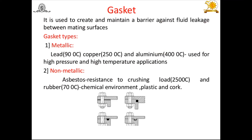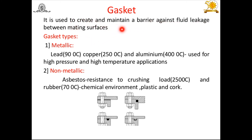The next topic is gaskets. In pressure vessels, gaskets are used to create and maintain a barrier against fluid leakage between mating surfaces. Various opening and closing parts are used, and gaskets maintain the barrier against fluid or liquid leakage between meeting surfaces. Gaskets are made of two types of materials: metallic and non-metallic. Metallic gasket materials include lead, copper, and aluminium. Lead can sustain up to 90°C, copper up to 250°C, and they are used for high pressure and high temperature applications.